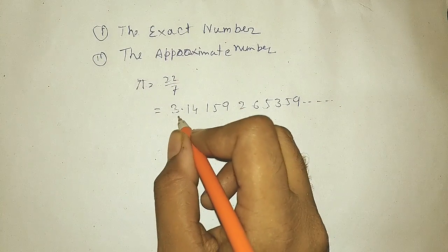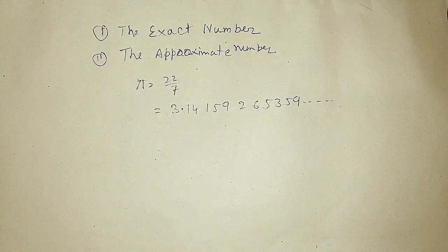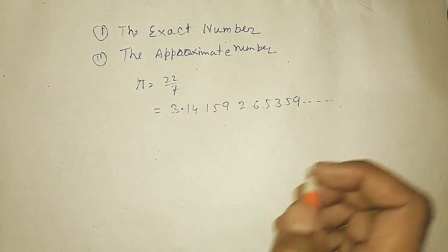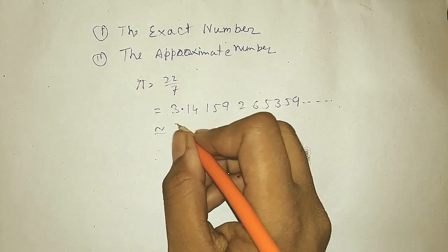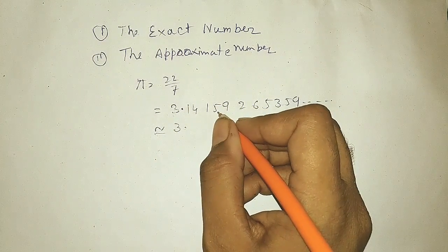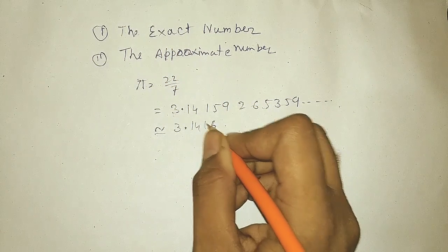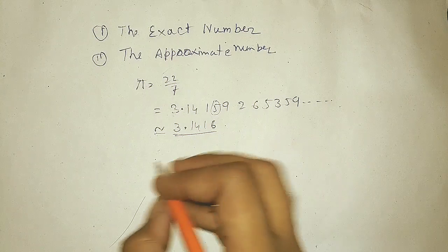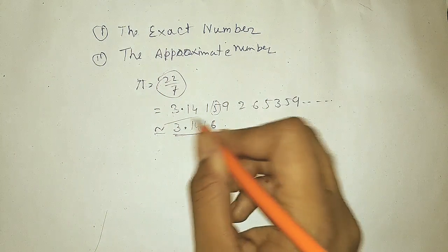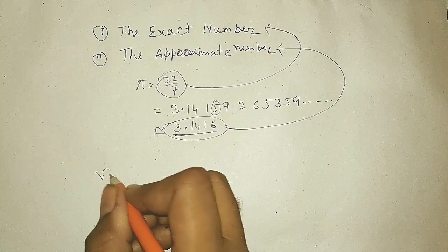We cannot calculate with the exact number because we cannot even stop writing it. So what we do is we approximate it — we round it off up to a certain decimal place and calculate with that rounded number. If we calculate to four decimal places it will be 3.1416. So 22 by 7 was the exact number but we cannot use it, so we use this approximate number instead.